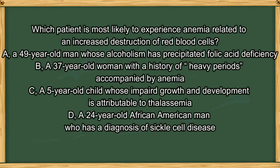Next question. Which patient is most likely to experience anemia related to increased destruction of red blood cells? A. A 49-year-old man whose alcoholism has precipitated folate deficiency. B. A 37-year-old woman with a history of heavy periods accompanied by anemia. C. A 5-year-old child whose impaired growth and development is attributable to thalassemia. D. A 24-year-old African-American man who has a diagnosis of sickle cell disease.